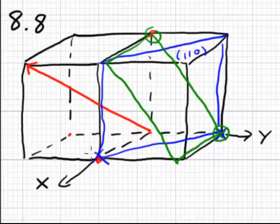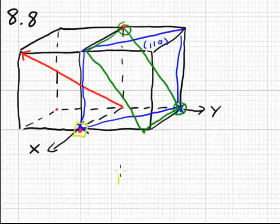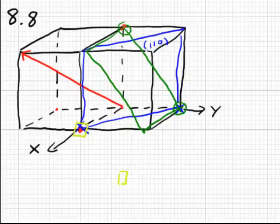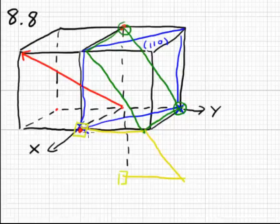We have no intercept of one, no y intercept, and a z intercept of negative one down here. Our plane looks like this, never intersecting the y-axis.